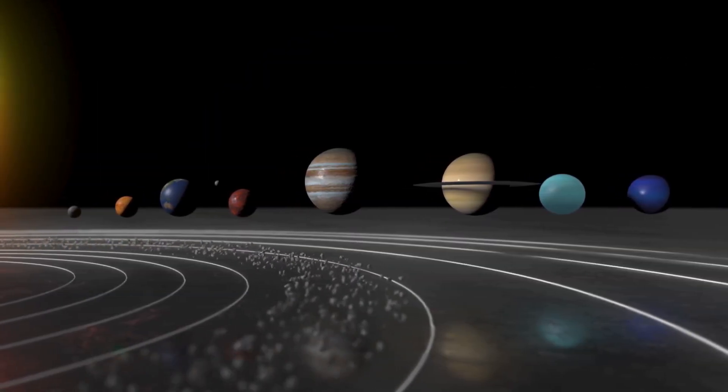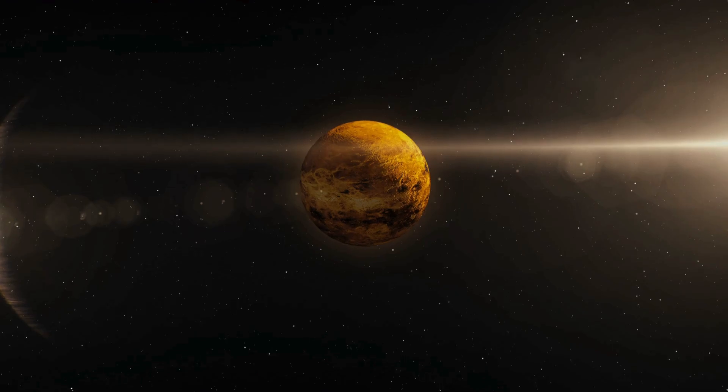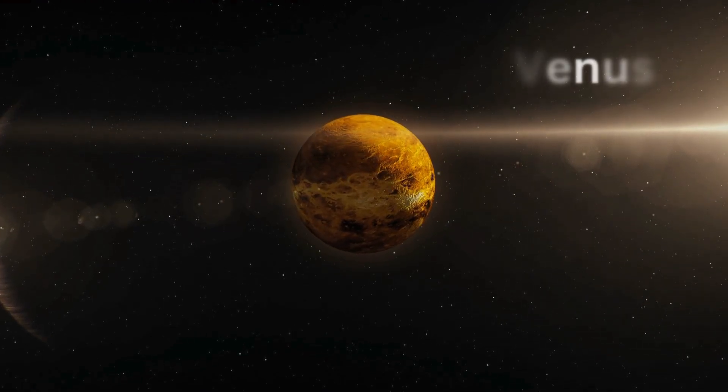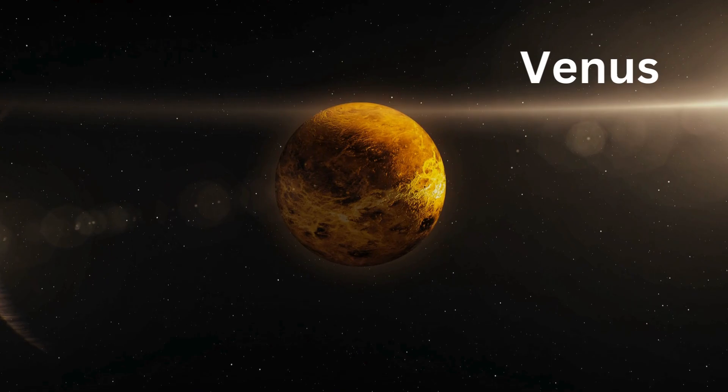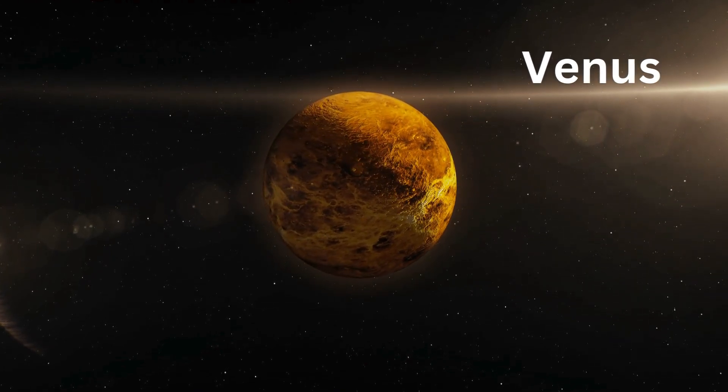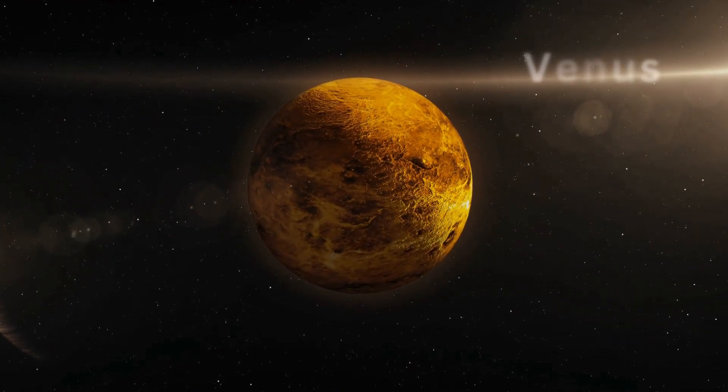Did you know Venus spins backwards? Yep, it rotates in the opposite direction of most other planets. And it's also the hottest planet in our solar system, even hotter than Mercury. Whoa!